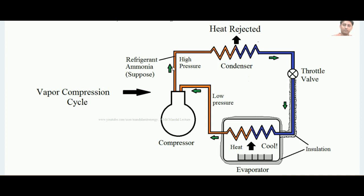Up to the throttle valve the pressure is high because the compressor has pressurized the refrigerant and it has rejected the heat in the condenser. Then the refrigerant is untwisted — meaning the pressure is reduced — and it is ready to absorb heat in the evaporator again. It goes back into the evaporator, absorbs heat again, the compressor raises the pressure, the condenser rejects the heat, and this job happens in a cyclic fashion. Continuously, heat is removed from the system at the evaporator, and the cooling effect is generated.